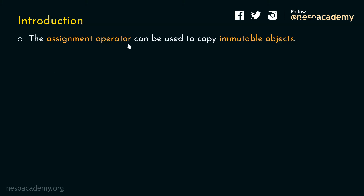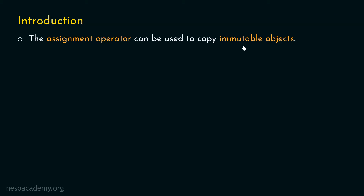The assignment operator can be used to copy immutable objects. An immutable object is an object whose value is not changeable. On the other hand, a mutable object is an object whose value is changeable. So, immutable objects can be copied using the assignment operator. Let's learn how to do this with the help of an example.